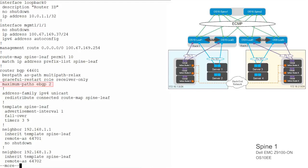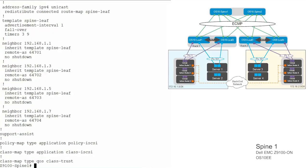In this topology, there are two equal cost best paths from a spine to a host — one to each leaf that the host is connected to. The neighbors for these spine switches are leaf switches with ASN 64701 through 64704. Similar configuration is needed on spine 2.